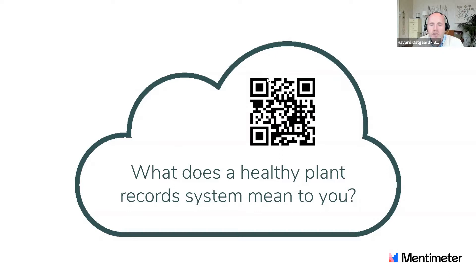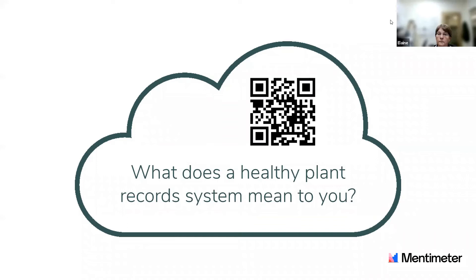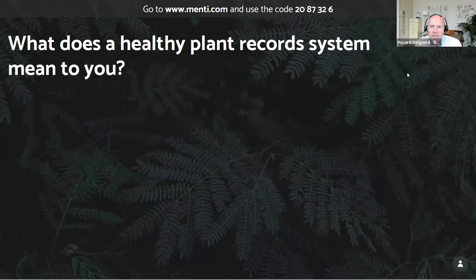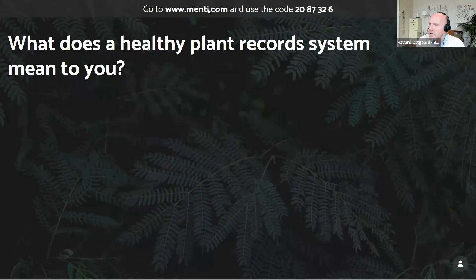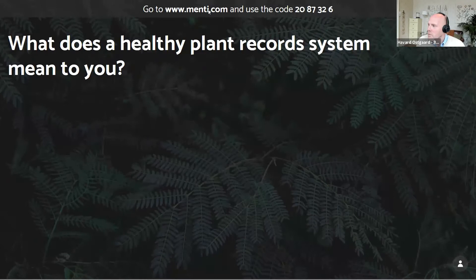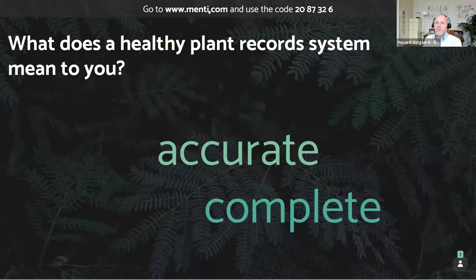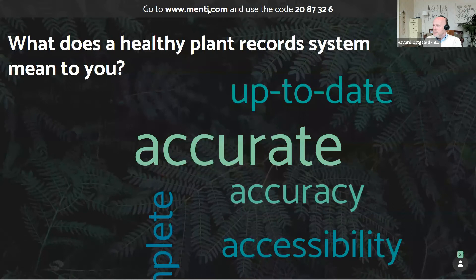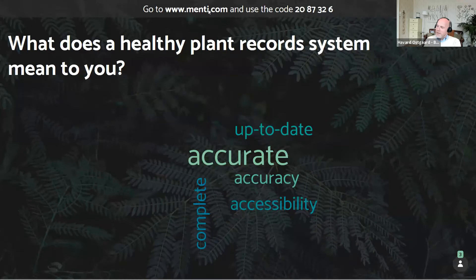We're going to do a small word cloud with Mentimeter. In the chat function you'll see a link, or you can scan the barcode on screen with your mobile. The question is: what does a healthy plant record system mean to you? You've got three words you can put in separately, one word at a time. Responses are coming in — accurate, accuracy, accessibility, comprehensive, complete.